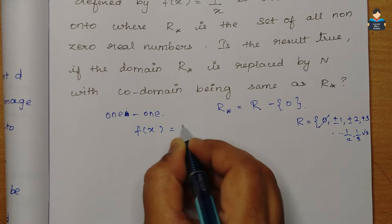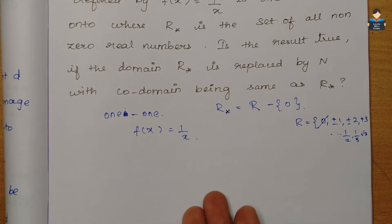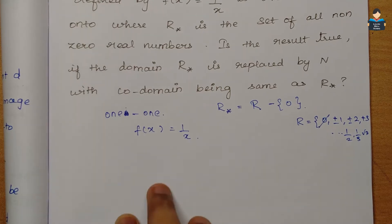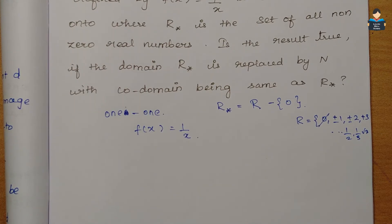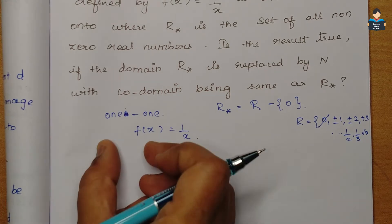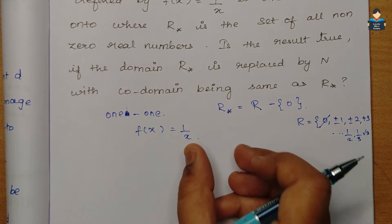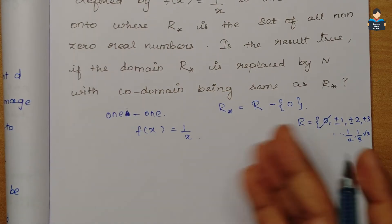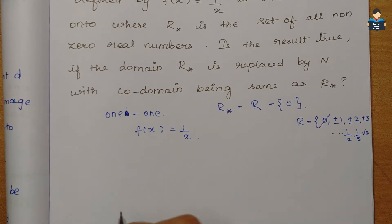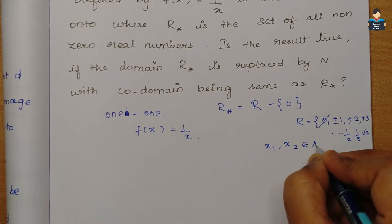The function f(x) = 1/x. For a 1-to-1 function — if you recall the introduction video — we apply the definition. For a function from A to B, let x1 and x2 belong to the domain A. We will use x1 and x2 as our variables.